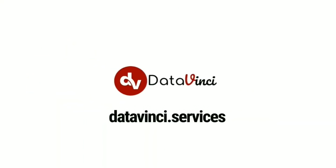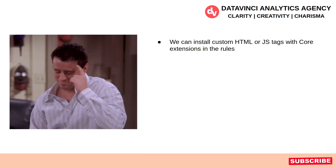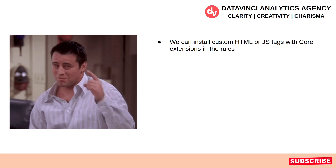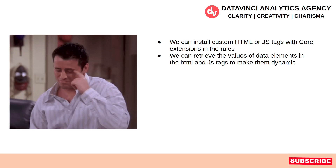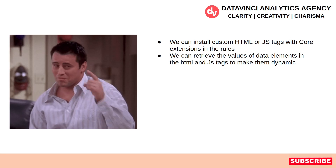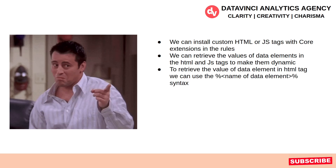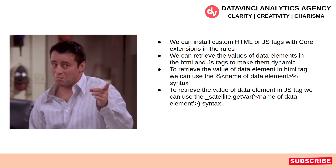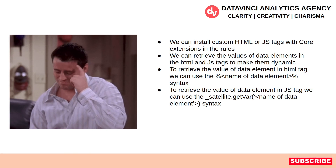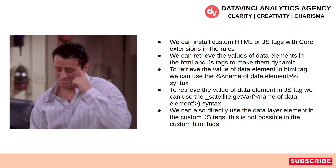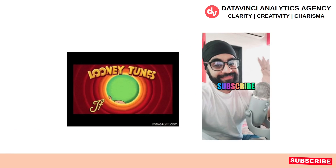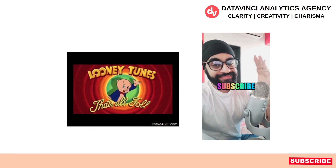Let's do a quick recap of what we've covered. We can install custom HTML or JS tags using Core extensions in Rules. We can retrieve the value of data elements in HTML and JS tags to make them dynamic. To retrieve values in HTML tags, use the syntax %name_of_data_element%. To retrieve values in JS tags, use the _satellite.getVar() function. We can also directly use data layer elements in custom JS tags, which is not possible in custom HTML tags. Hope you liked the video — don't forget to subscribe.